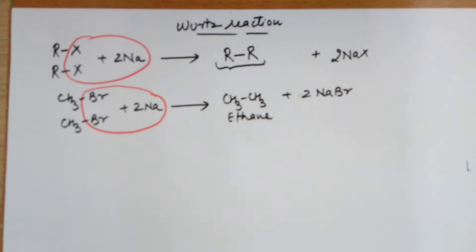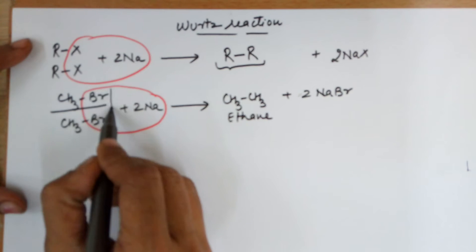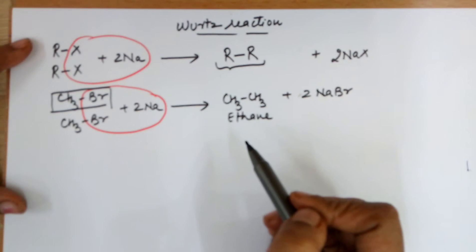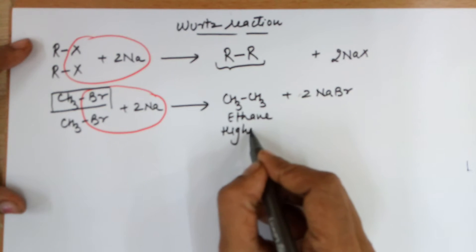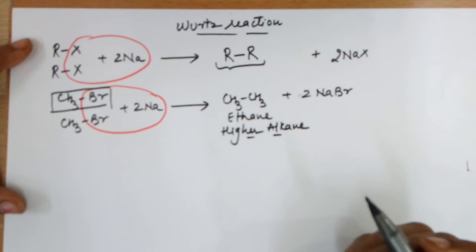Now as you can see in this reaction, you started with a reactant of one carbon and you ended with a product of two carbons. Therefore you are getting a higher alkane. That is, the carbon number is increasing.